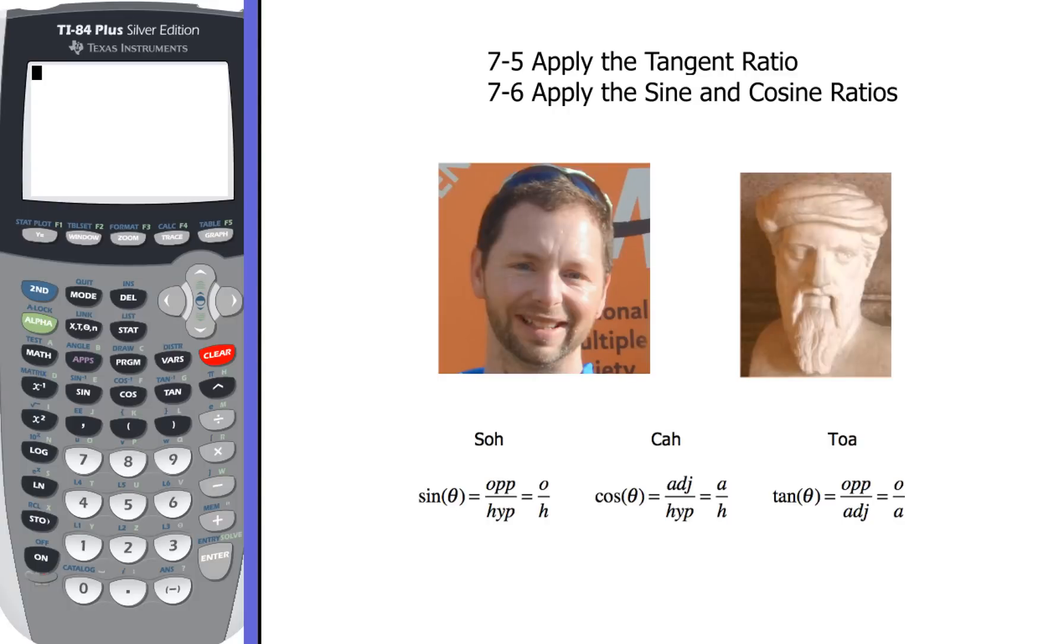All right, welcome back to the second half of applying sine, cosine, tangent ratios with Mr. Muscarella and Pythagoras. Now just remember, sine is the ratio of opposite over hypotenuse, cosine is adjacent over hypotenuse, and tangent is opposite over adjacent. And again, a lot of math teachers will use that acronym SOHCAHTOA. All right, so that's one way to keep those straight.